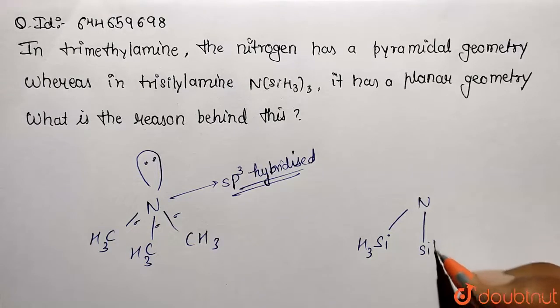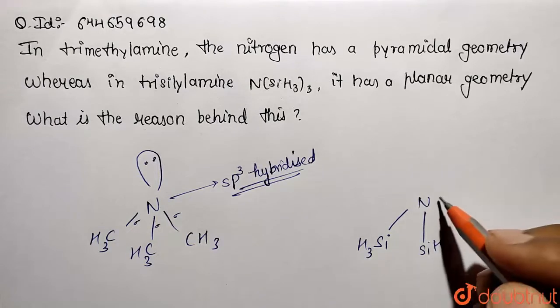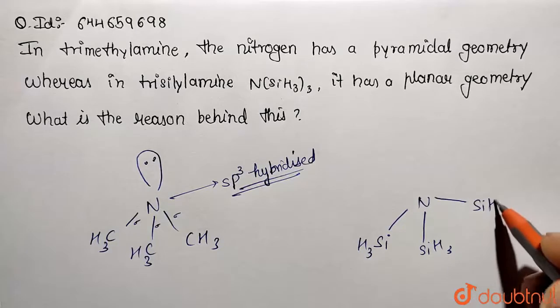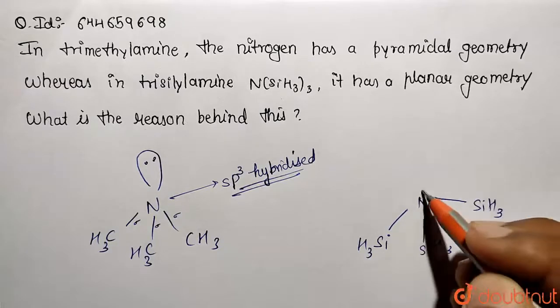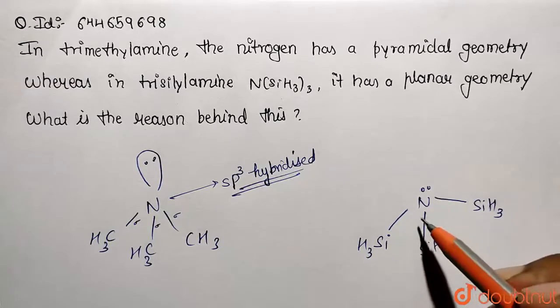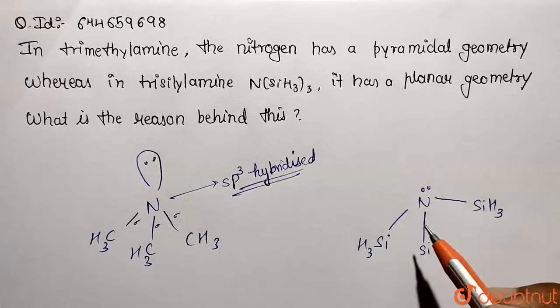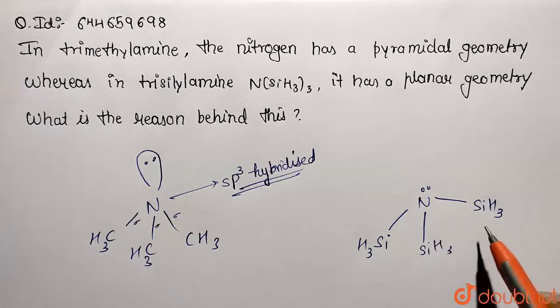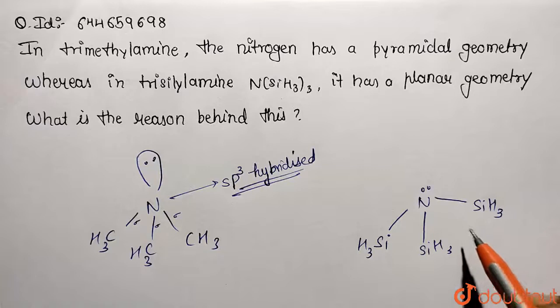And similarly, this is going to be SiH3. So what happens, this lone pair available on the nitrogen will be used for making a back bonding. What happens: silicon is containing vacant d orbital, so that's why formation overlapping of p-pi d-pi back bonding takes place.